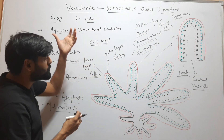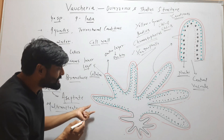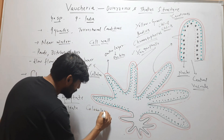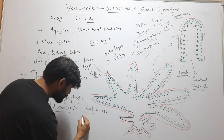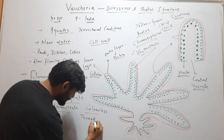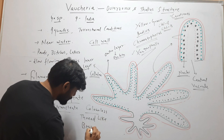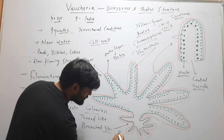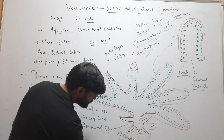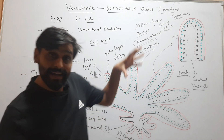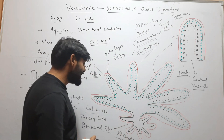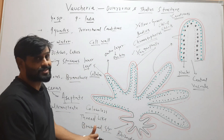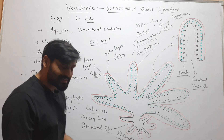The Vaucheria thallus is attached to the substratum by colorless, thread-like, branched structures. These structures are called rhizoids. So this whole thallus is attached to the substratum through these colorless, thread-like, branched rhizoids.